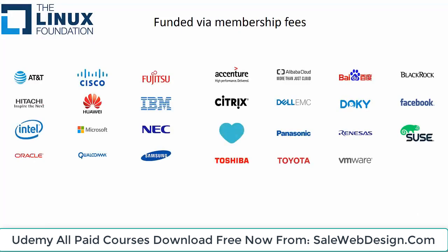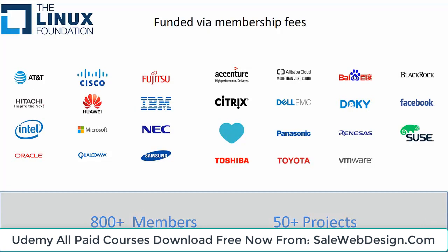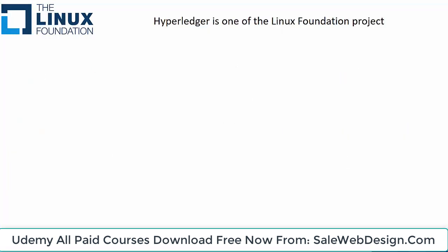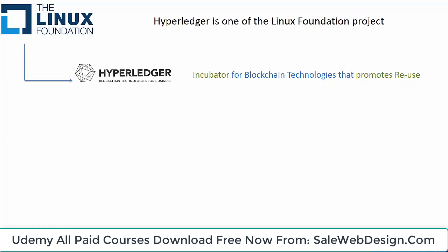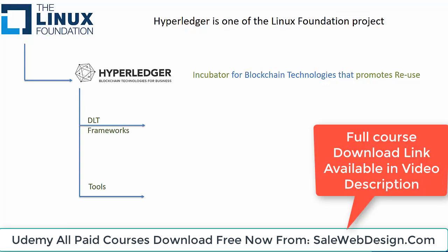The Linux Foundation has dedicated staff and all initiatives are funded via membership fees. As of 2017, there are 800 plus members and 50 plus active projects under the Linux Foundation. Under the Linux Foundation, Hyperledger is the incubator for blockchain technologies for business. All Hyperledger initiatives are put in one of two categories: DLT frameworks and tools. There are four active DLT framework initiatives.